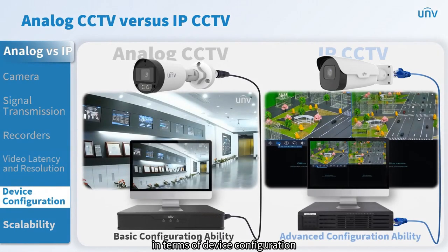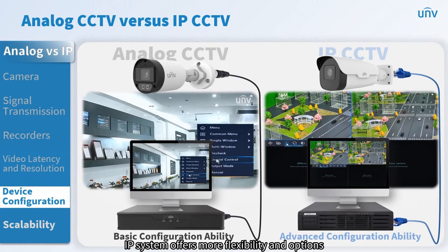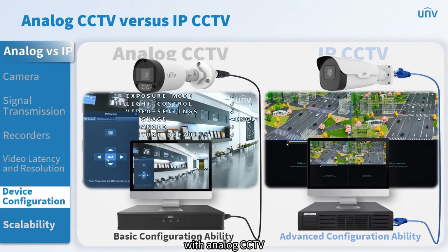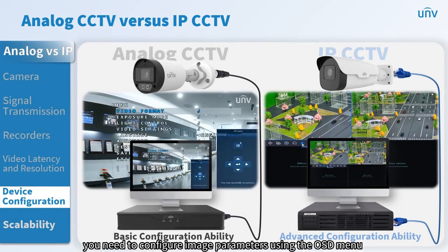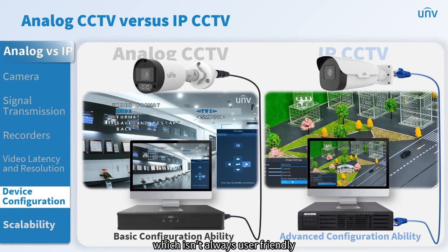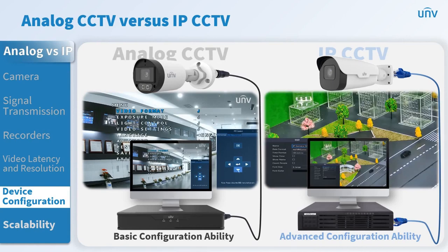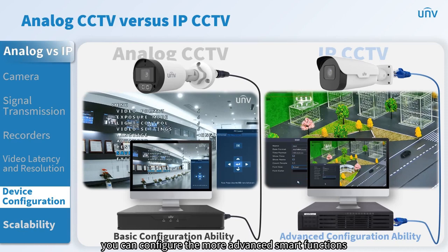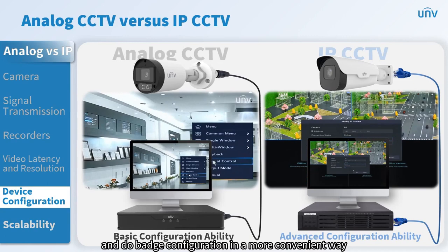In terms of device configuration, IP systems offer more flexibility and options. With analog CCTV, function configuration is somewhat limited. For instance, you need to configure image parameters using the OSD menu, which isn't always user-friendly and doesn't provide as much content. With IP systems, you can configure more advanced smart functions and do batch configuration in a more convenient way.